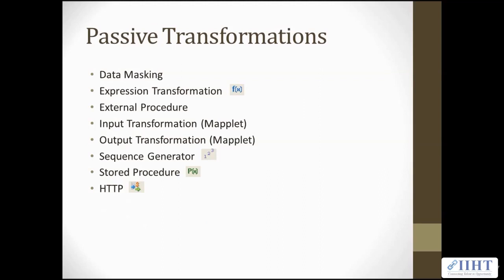Here are a few examples of the passive transformations. Data Masking replaces sensitive production data with realistic test data for non-production environments. The Expression transformation calculates a value. The External Procedure transformation calls a procedure in a shared library or in the COM layer of Windows.